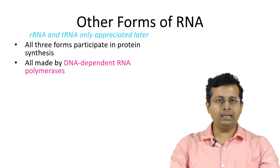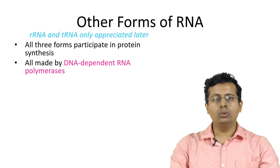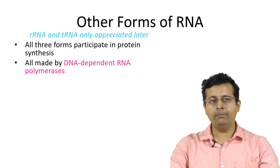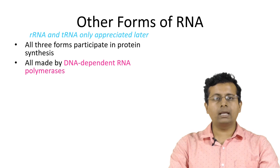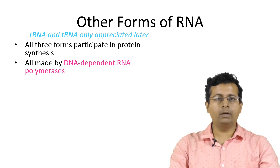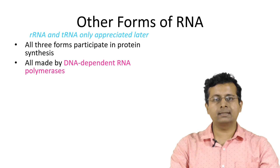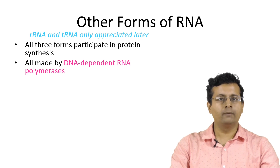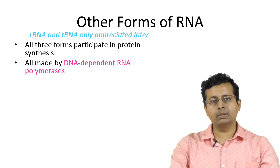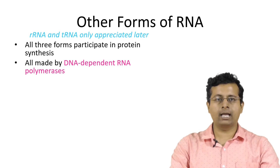Therefore, broadly, any gene can encode two different categories of RNAs: the mRNAs that encode for proteins, and the non-coding RNAs. The non-coding RNA category is quite diverse, but for the time being, let us restrict ourselves to two such RNA species which assist in protein synthesis but do not encode for proteins. These are ribosomal RNAs and transfer RNAs.